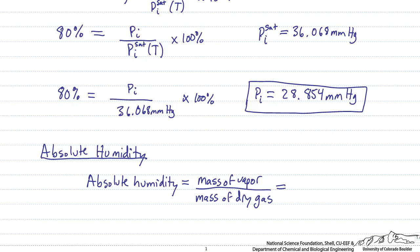So we can write this mathematically as P_I, the partial pressure of component I, times the molecular weight of component I, divided by the total pressure minus the partial pressure of component I, times the molecular weight of the dry air.